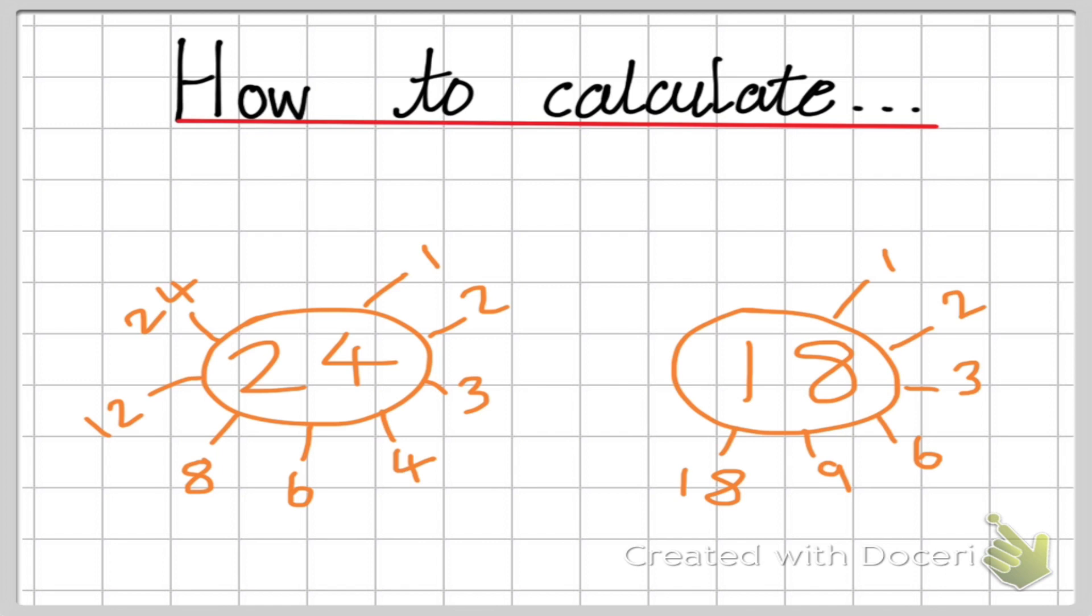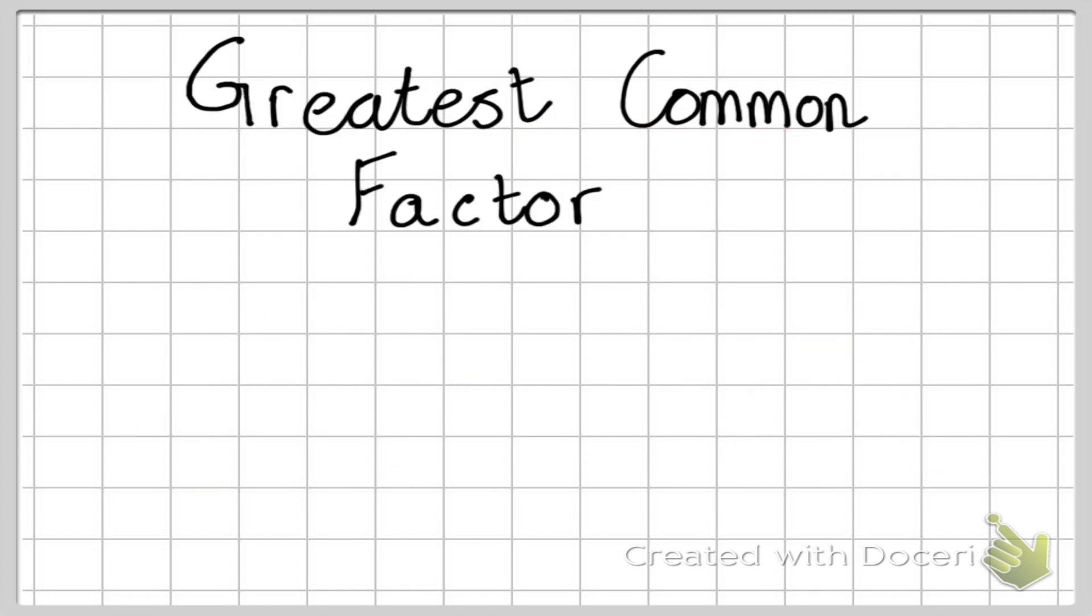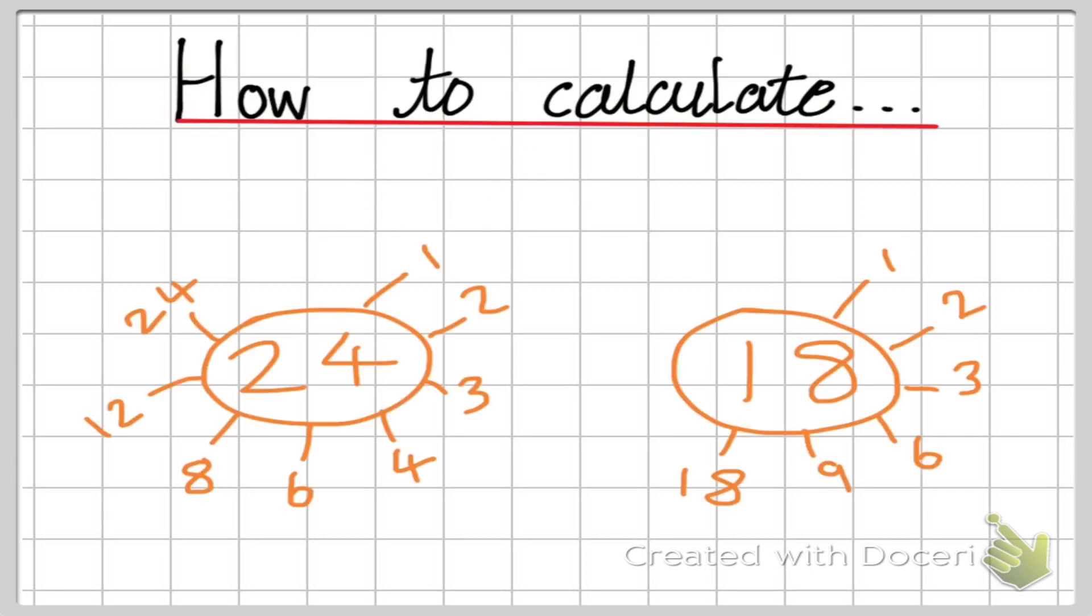Now if I'm finding the greatest common factor, then I need to find the largest, because it says the greatest, and common, so that means numbers that are in both lists. So I'm going to first highlight the numbers that are in both lists. So 1 and 1, 2 and 2, 3 and 3, 6 and 6. And that is it.